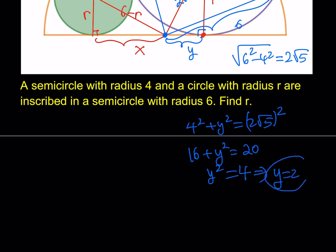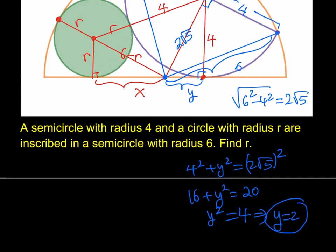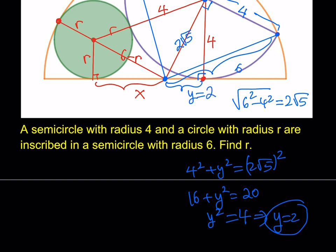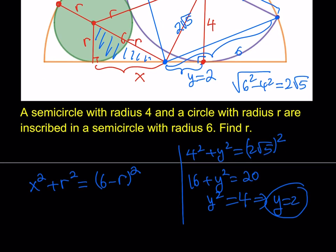My goal is not to find y, but finding y will help me. So y equals 2. Nice. What else do I know? I need to know x, but I don't know it, right? But I can write an equation regarding x. How am I going to do that? Well, just the Pythagorean theorem in this triangle. Here we go. Let's go ahead and write it down. It's going to look like what? x squared plus r squared equals 6 minus r quantity squared.